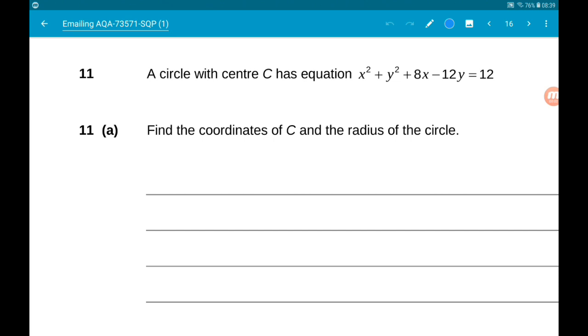Okay, question 11. A circle with centre C has equation x squared plus y squared plus 8x minus 12y is equal to 12. Now for three marks, we want to find the centre of the circle and the length of the radius.